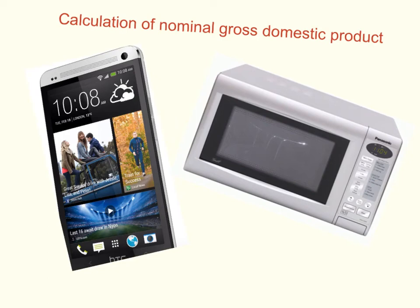Hello, it's John Bauman with another calculation of gross domestic product. In this example we're going to calculate nominal gross domestic product in an economy where we assume there are only two products: smartphones and microwave ovens.